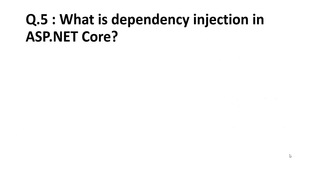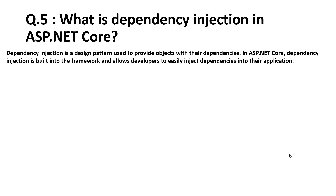The fifth question is: what is dependency injection in ASP.NET Core? It is also a very important question. Dependency injection is a design pattern used to provide objects with their dependencies. In ASP.NET Core, dependency injection is built into the framework and allows developers to easily inject dependencies into their application.